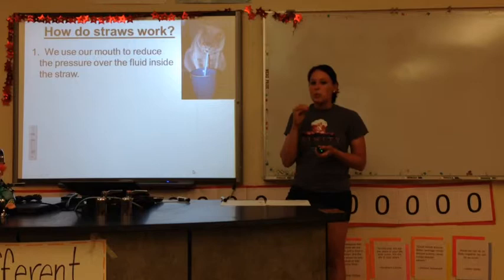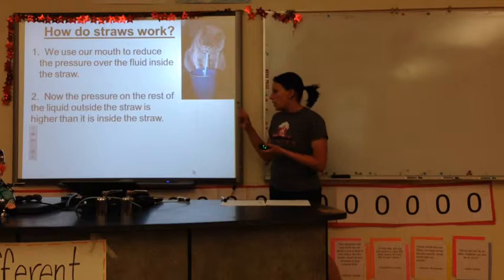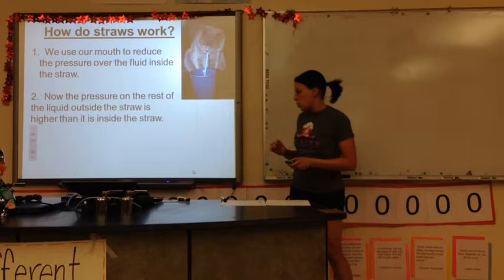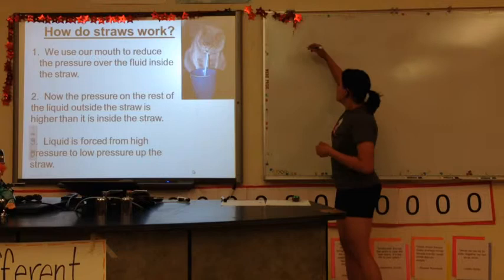In words, the first thing that happens when you're drinking through a straw is you use your mouth to reduce the pressure that's above the liquid but still inside the straw. Now, the pressure on the outside of the liquid or on the outside of the straw, that liquid is greater relative to the pressure that's above the liquid inside the straw. So liquid is basically forced up from high pressure to low pressure.